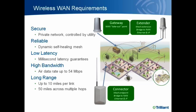Technology from Trilliant can provide links up to 10 miles apart and can hop over multiple links. For example, across five hops you can extend coverage out across 50 miles. There are a couple of different components of this Wireless WAN. The gateway is a device that provides the start of a Wireless WAN network that connects to a wired backhaul network. The extender takes the Wireless WAN and extends it over multiple hops of a mesh network. The connector provides an endpoint on the Wireless WAN mesh.